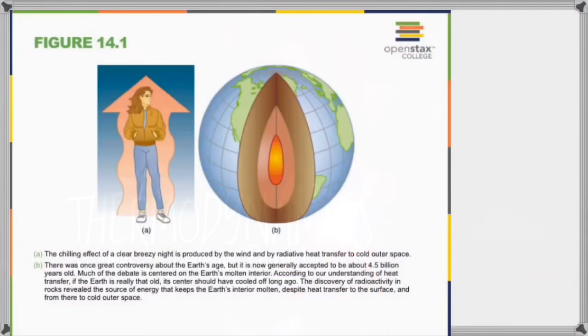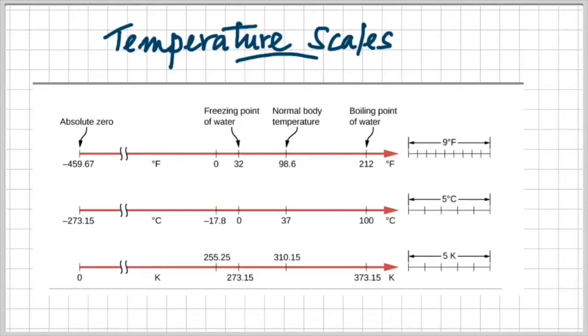You should understand that we never use Fahrenheit in physics, in calculation. If possible, do not use Celsius. Celsius will work sometimes, but Kelvin will always work. So if you are ever in doubt, use Kelvin. And so in one minute, we are going to look at how we change from one scale to the other.